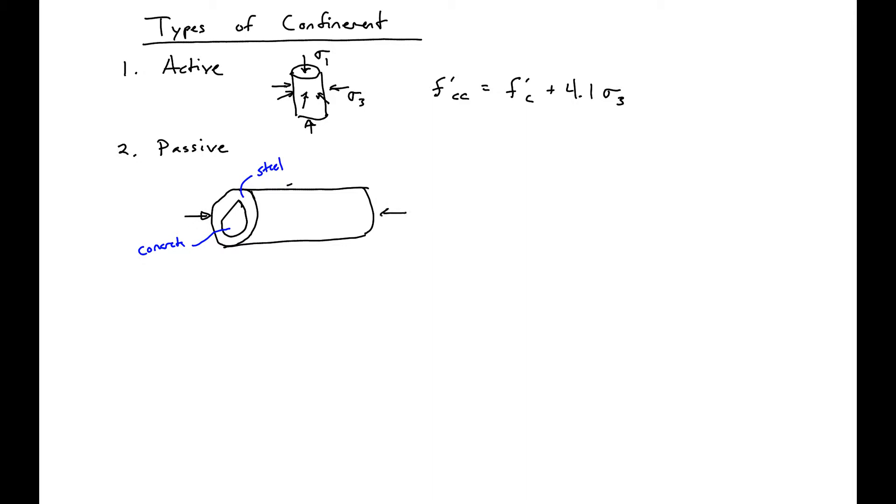When we apply a load P, what's going to happen is... So the initial Poisson's ratio for concrete is about 0.17, and Poisson for steel is 0.25.